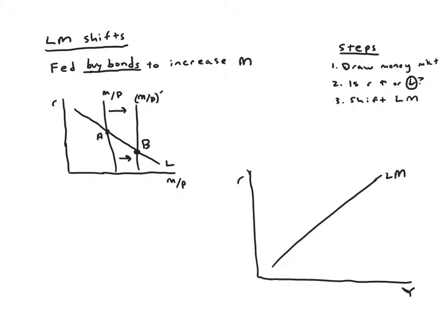So step two, did it increase or decrease? It decreased. And that tells us that the LM curve is now going to represent for any given level of income a lower associated interest rate so the whole curve is basically shifting downward.